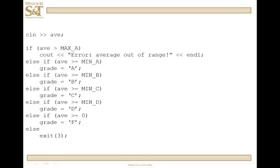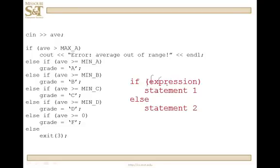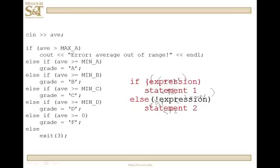I want to make sure you understand something. You have if some expression and a statement, else and another statement. A common mistake made by people first learning programming is they'll try to put some sort of expression after the else — say, 'not expression.' But this is totally unnecessary. If expression is true, do this; otherwise, do that. You don't need to say anything after else, and in fact it won't compile. So don't make that mistake.